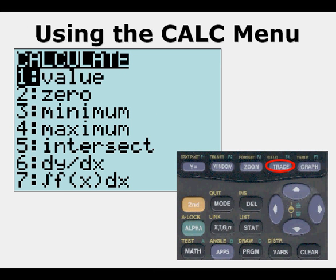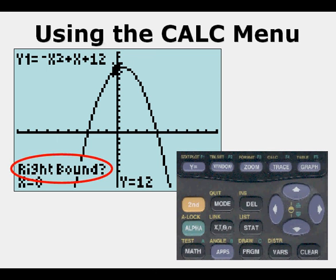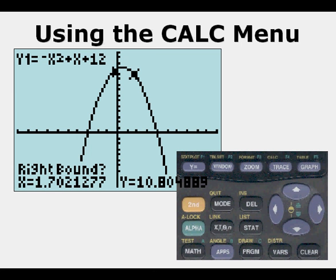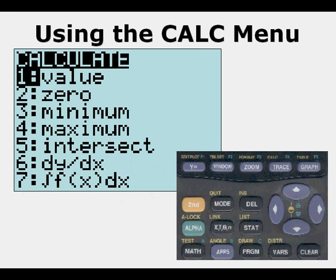We go to second trace, down to option 4 Maximum, and press enter. It asks for the left bound; our cursor is just to the left of the vertex so we press enter. Then it asks for right bound; we arrow a few strokes to the right of the vertex and press enter again. We have two inward-facing arrows, press enter a final time, and it gives us a maximum of x equals 0.5, y equals 12.25.